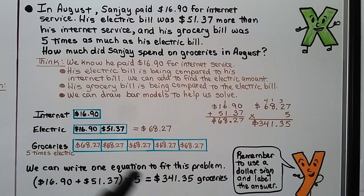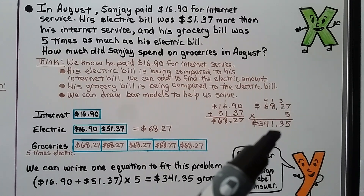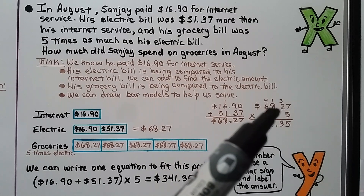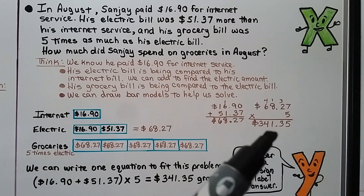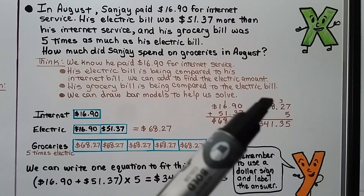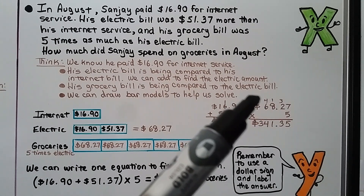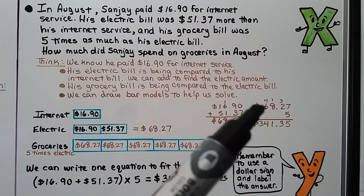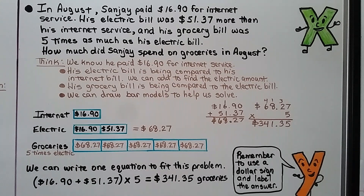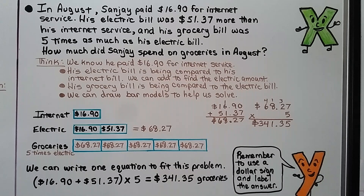That's 5 times the electric bill. We multiply: 5 times 7 is 35, regroup the 3; 5 times 2 is 10, plus 3 is 13, regroup the 1; 5 times 8 is 40, plus 1 is 41, regroup the 4; 5 times 6 is 30, plus 4 is 34. We get $341.35. The single equation for this problem is ($16.90 + $51.37) times 5. Remember to use a dollar sign in your answer and to label what you're counting.